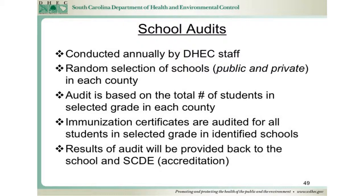Beyond the 45-day report, school audits are conducted as well. School audits are done annually by DHEC staff. The Immunization Division does a random selection of schools, public and private, in each county. The school audit is based on the total number of students in the selected grade in each county. It consists of a review of all immunization certificates for the selected grade level in the identified schools to assess compliance with immunization requirements. The results of the audit will be provided back to the school and are reported to the South Carolina Department of Education as part of the accreditation process.